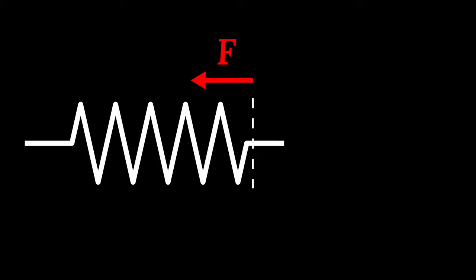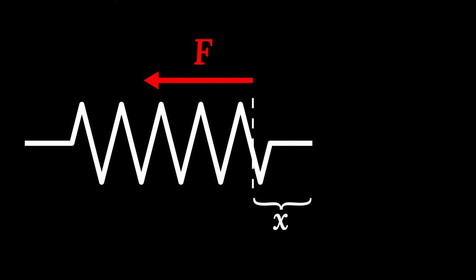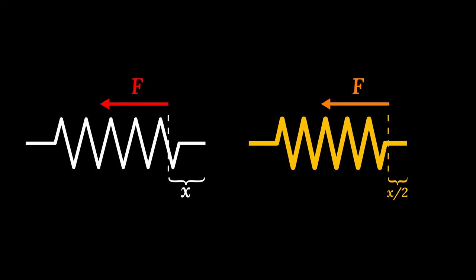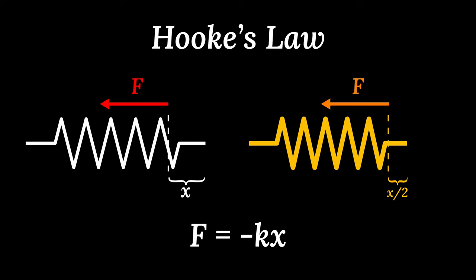When you expand or contract a spring, you feel some resistance. The spring is always trying to return to its original length. It applies a force that grows linearly as you stretch the spring a distance x. Some springs are harder to stretch than others, so we multiply this distance by a constant k to account for its stiffness. The force is always in the opposite direction of the stretching or squishing, so we add a negative sign. This is known as Hooke's Law. The force an ideal spring applies is negative kx.